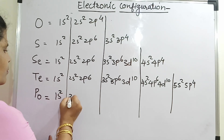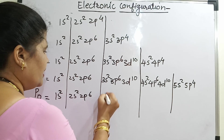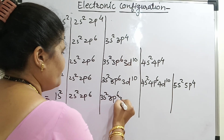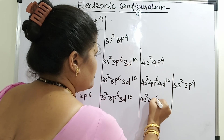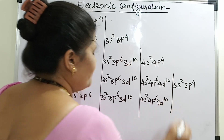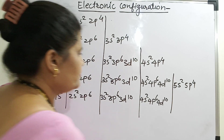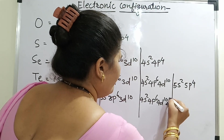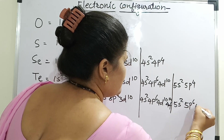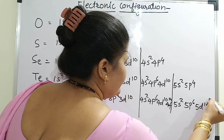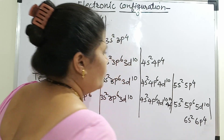For polonium: 1s2, 2s2, 2p6, then 3s2, 3p6, 3d10, then 4s2, 4p6, 4d10. Now what is important here — you will introduce 4f14, then 5s2, 5p6, 5d10, and then it will be 6s2 and 6p4. So let us come to group 17.